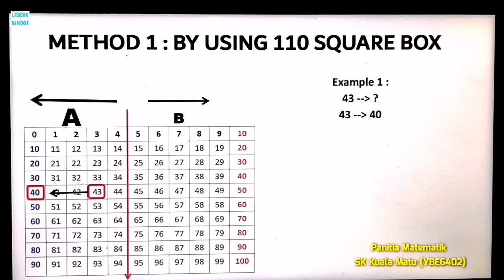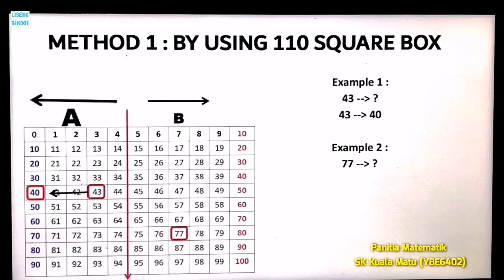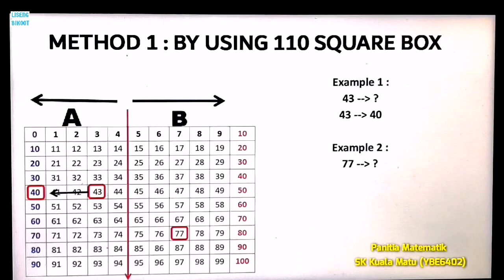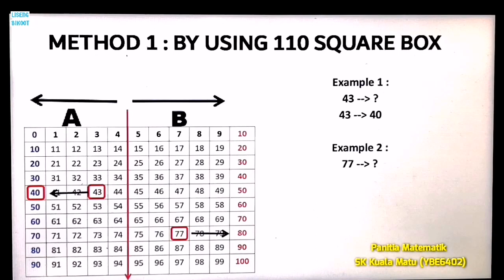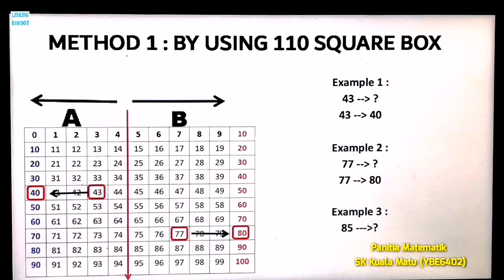The answer is 40. Now Example 2: round number 77 to the nearest ten. Find number 77 inside the box and circle it. Number 77 is in Area B. Look at the arrow direction and draw it — the arrow points to number 80, so the answer is 80.